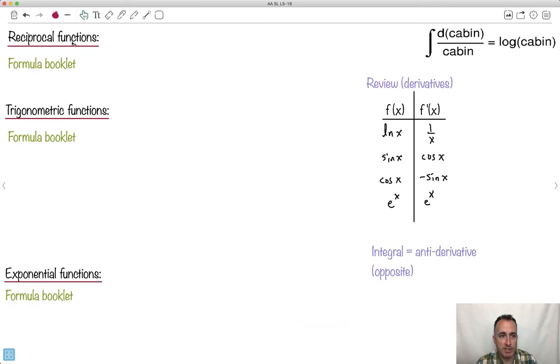Now let's deal with reciprocal functions. Let's just look at the formula booklet. Remember for derivatives, we had f of x, which if it was natural log of x, it became 1 over x if it was the derivative. Just like the derivative of sine is cos, derivative of cos is negative sine, and the derivative of e to the x is e to the x.